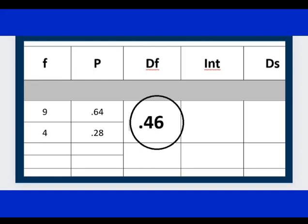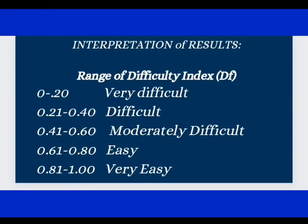In our example, we have 0.64 plus 0.28 divided by 2—we get 0.46. And we need to interpret 0.46. What does that mean? May I show you the different ranges of difficulty index or difficulty level. This shows that difficulty index may range from very difficult, difficult, moderately difficult, easy, or very easy. Now the question is: where does 0.46 fall? 0.46 is between 0.41 and 0.60, therefore the interpretation of that particular item is moderately difficult.